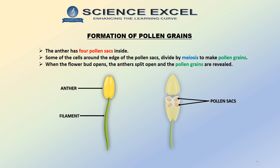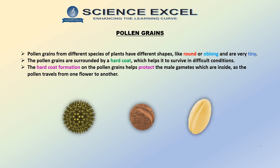Did you know that the anther has 4 pollen sacs inside it? Some of the cells around the edge of the pollen sacs divide by meiosis to make pollen grains. When the flower bud opens, the anthers split open and the pollen grains are then revealed. The pollen looks like a fine powder. Pollen grains from different types of flowers have different shapes like round or oblong. Each grain is surrounded by a hard coat so that it can survive in difficult conditions. This coat protects the male gametes that are inside the grains as the pollen is carried from one flower to another.